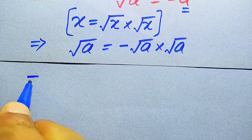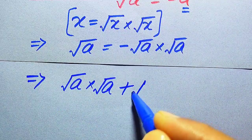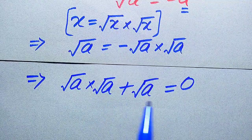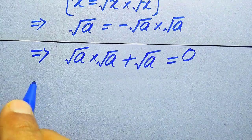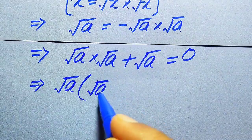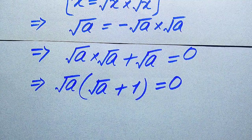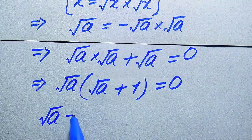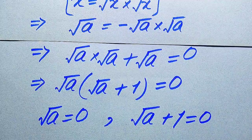We move the terms from the right hand side to the left hand side, and it becomes square root of A multiplied by square root of A plus square root of A equals zero. Both terms involve square root of A, so square root of A is the common term. We take common square root of A and get square root of A times square root of A plus 1 equals zero. We divide this into two cases: square root of A equals zero, and square root of A plus 1 equals zero.